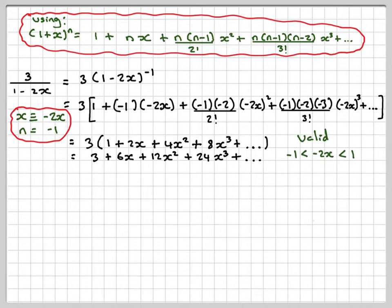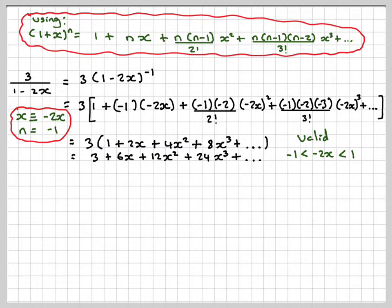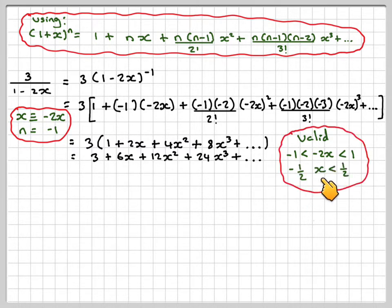This expansion is valid provided that |-2x| < 1, which means x must be between -1/2 and 1/2.